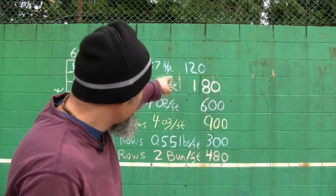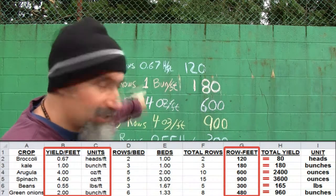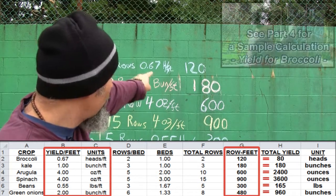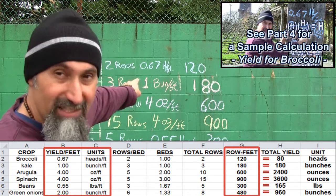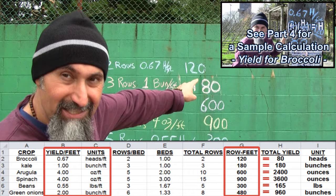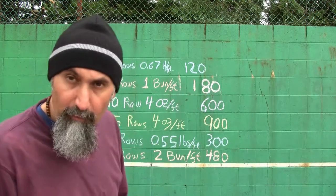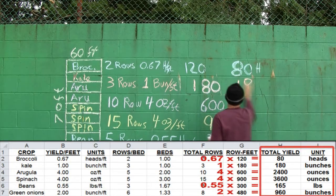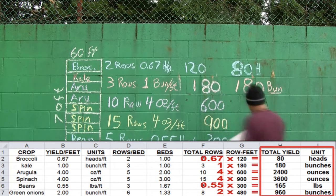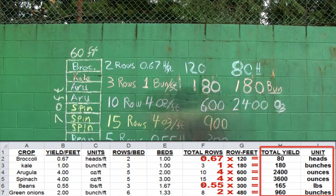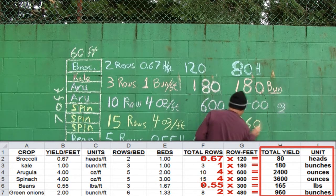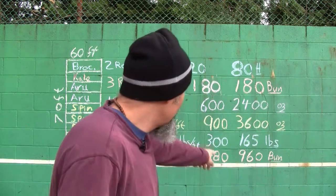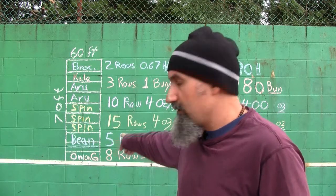To calculate the total yield, all we have to do is multiply the total row feet by the yield spec per crop. For broccoli: 120 times 0.67 heads per foot gives us about 80 heads. For kale: 180 times 1 bunch per foot gives us 180 bunches. We also get 2,400 ounces of arugula, 3,600 ounces of spinach, 165 pounds of beans, and 960 bunches of green onions.